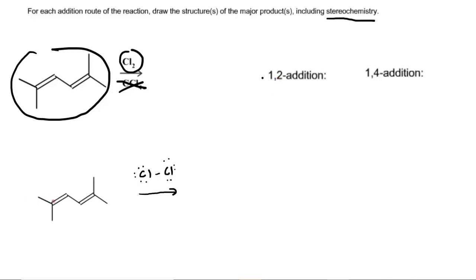Here we have our conjugated diene. Notice it's a symmetrical conjugated diene, so which of the two double bonds we use in the attack doesn't matter. We will select the first double bond and highlight the pi bond in red to emphasize that these pi electrons will come out and attack one of the chlorines, while simultaneously the bond between the chlorines will break.